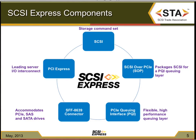There are five major components of SCSI Express. The first is the SCSI command set. The second is called SCSI over PCI, which is the specification for how you package SCSI commands into information units and how those information units are passed between a SCSI target and a SCSI initiator. Once you've created these SCSI information units or messages, you need to get them across the PCI Express bus, and the method for doing that is called the PCI Express Queuing Interface, or PQI, which provides the model by which messages are passed through different queues.